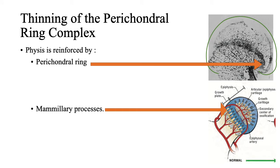What prevents the slip? One thing is the perichondral ring complex, which is specially posterior, and this prevents the posterior slip. The second thing is that from the zone of ossification there are mammary processes invading the cartilage of the physis, and these mammary processes must fail to allow the slip.